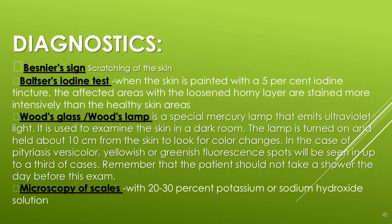How to diagnose it? We have the Besnier's sign, which involves scratching of the skin. The second is the Balzer iodine test, where the skin is painted with a 5% iodine solution — in affected areas with a loosened horny layer, staining is more intense than in healthy skin. The most well-known method is the Wood's lamp, a special mercury lamp that emits ultraviolet light, used to examine the skin in a dark room. The lamp is held about 10 cm from the skin to look for color changes. In pityriasis versicolor, you will see yellowish or greenish fluorescent spots. Remember that the patient should not shower the day before this exam. The last method is microscopy of scales with 20–30% potassium or sodium hydroxide solution.